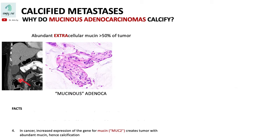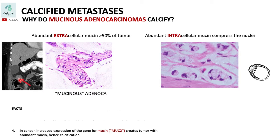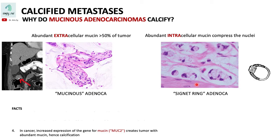On the other hand, if the abundant mucin is intracellular, the mucin would push the nucleus of the cells aside, creating this pattern — the disappearance of the nucleus, or a signet ring appearance. So this tumor with abundant intracellular mucin is called the signet ring adenocarcinoma.